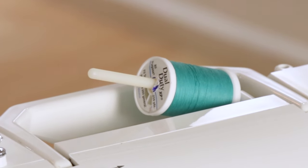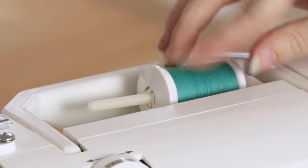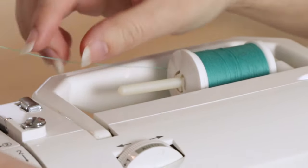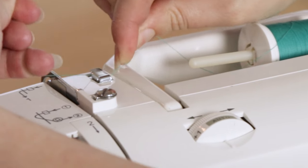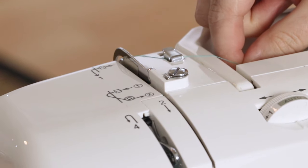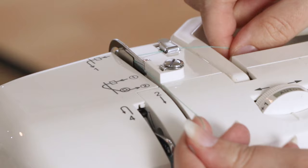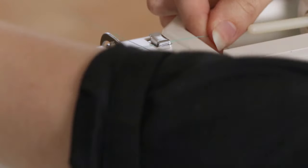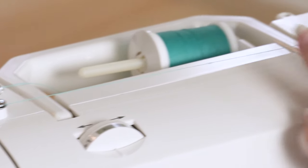Place your spool of thread on the spool pin and cap it with the spool cap. Bring the thread to this metal guide and clip it in, then come to the second metal guide and bring it around. Then you'll want to wrap it around the bobbin winding tension disc and come over to the bobbin winding spindle.